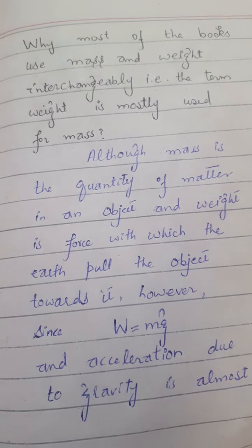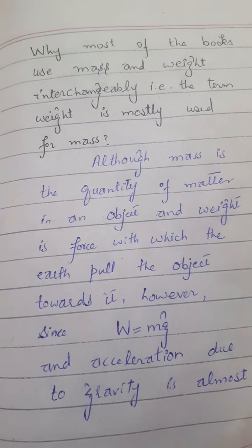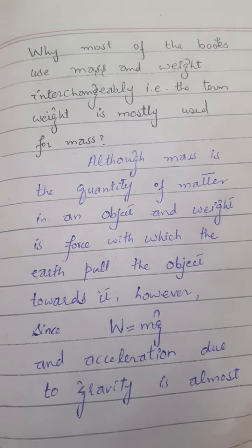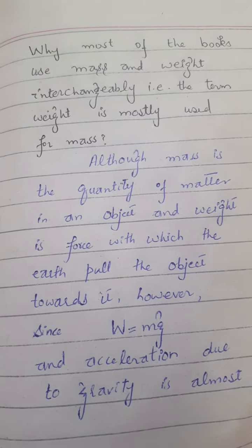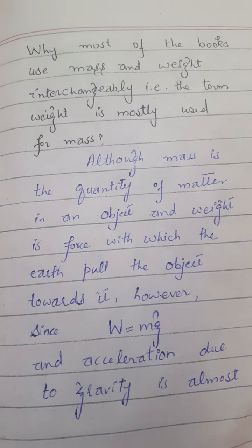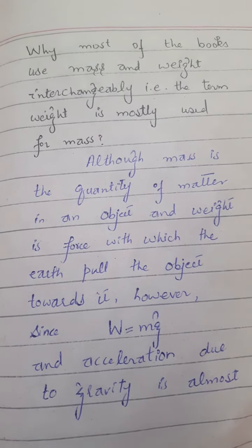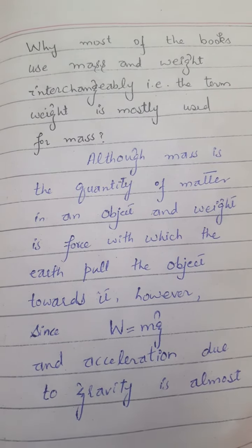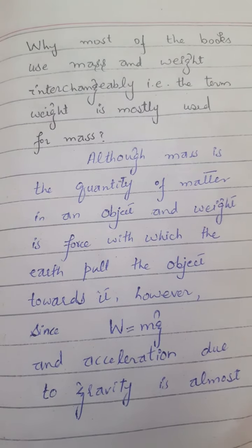The answer is: although mass is the quantity of matter in an object, and weight is the force with which the Earth pulls the object towards it, since W is equal to mg — W is used for weight and m is used for mass.